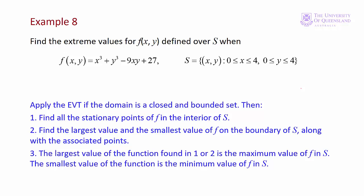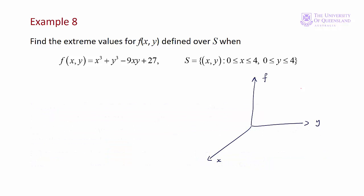Let's have a look at the domain of our function. The domain is defined in the xy plane. Both x and y range from 0 to 4, so along the x-axis we go to 4, and along the y-axis we go to 4. The domain will be an area enclosed in a square. We can see the domain is closed and bounded, so we can apply the extreme value theorem — there is a global maximum and a global minimum for the function in that domain.